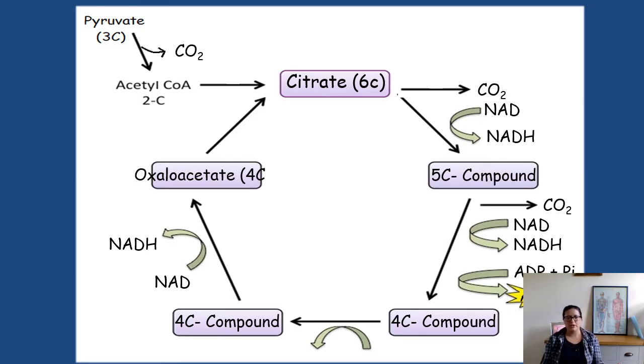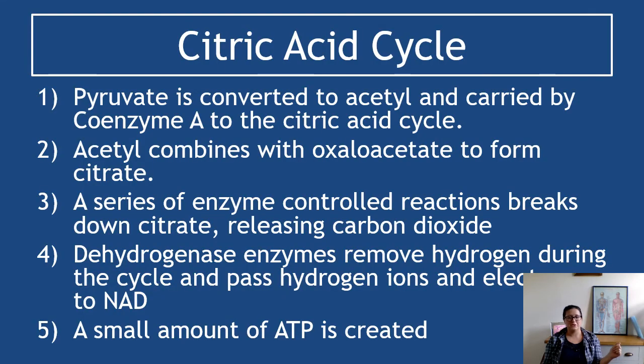I'm going to summarize again very quickly. Pyruvate converted to acetyl picked up by coenzyme A, which carries it to the citric acid cycle. We've lost one carbon dioxide. Acetyl combines with oxaloacetate to form citrate. Citrate is broken down through a series of reactions to create carbon dioxide, NADH, and a small amount of ATP. That's the summary. And there you go, it's in words.